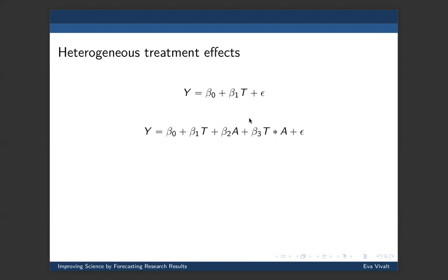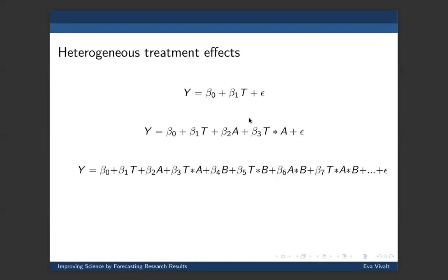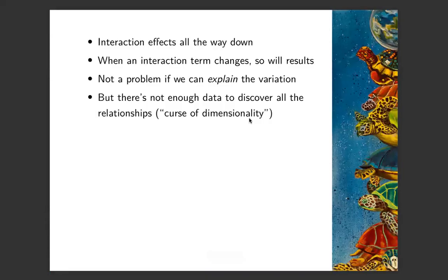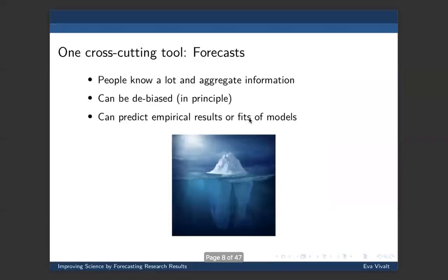You can think of many other examples of this kind - you're doing a study in one particular lab, trying to replicate it in another lab, getting different results, and you're really not sure why. The issue is that there can be all sorts of different interactions - you can have a much more complicated model. I've got this nice little graphic of turtles all the way down, because the way I think of the world is as having interaction effects all the way down. When some interaction term changes, your results are going to change. This isn't a problem if you can explain that variation, but there's just not enough data out there to tease apart everything that's going on. So what can you do? I would argue that one of the things you can do is to use forecasts.